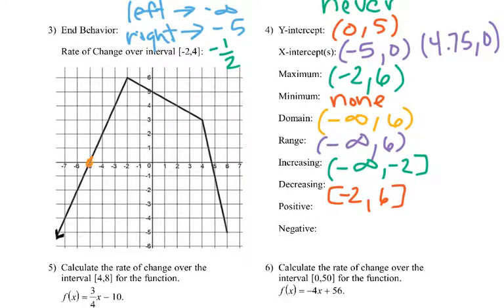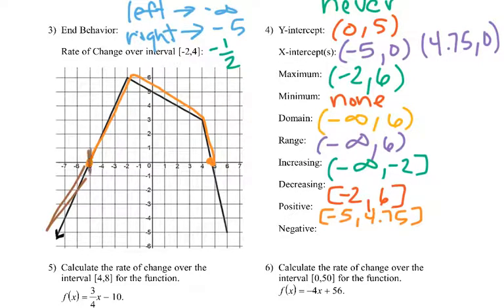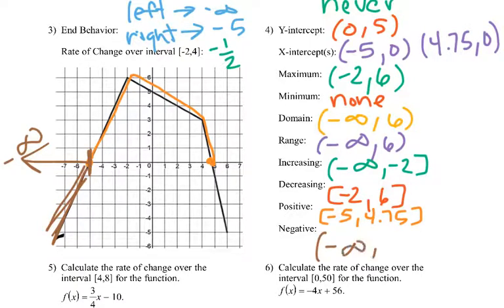Positive — from negative 5 to that other x-intercept of 4.75, that's where we're positive: negative 5 to 4.75. For negative — we start here at negative 5 and it's going to keep going to negative infinity. So we start at negative infinity and we go until we get to negative 5. Then we jump, start at 4.75, and go until we get to 6, which is below the x-axis.